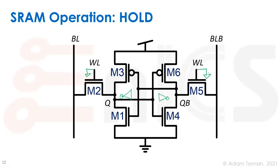During hold, we shut off the word lines so M2 and M5 are held at ground. We assume on the left side Q is holding a 1 and the right side holds a 0. With VDD stored at Q, it propagates to the gates of M6 and M4 — shutting off M6 and enabling M4, driving QB down to ground. QB equals 0.